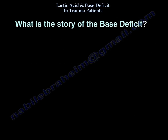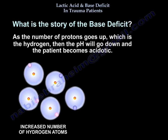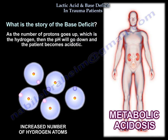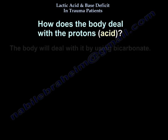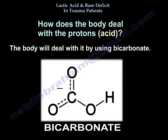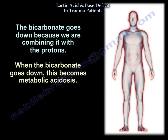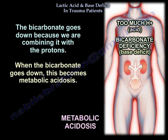So what is the story of the base deficit? As the number of protons — which is the hydrogen — goes up, the pH will go down. The patient becomes acidotic. So how does the body deal with the protons, the acid? The body will deal with it using bicarbonate. Bicarbonate is the buffer — if the pH goes down because there are a lot of protons in the body, the bicarb will be used up. The bicarb goes down because we're combining it with the protons, and when the bicarb goes down, it becomes a metabolic acidosis.